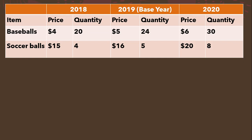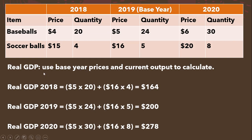Now we're going to calculate real GDP. When you calculate real GDP, you use base year prices — so we're always going to use $5 and $16 in all our calculations, regardless of the year. Real GDP uses base year prices and the current output. So in 2018, real GDP is the quantities in 2018 multiplied by the base year prices: 5 times 20 and 16 times 4, giving us $164 of real GDP in 2018.